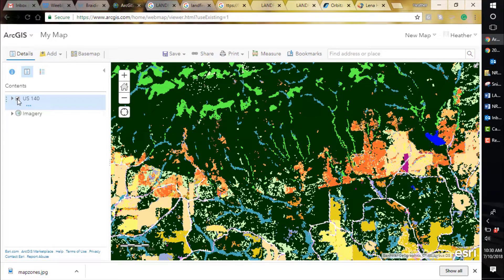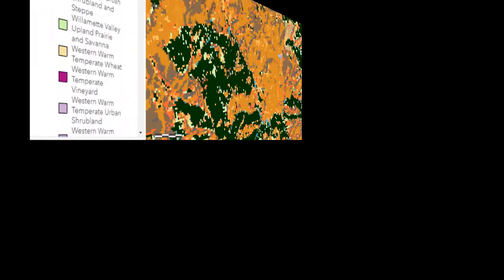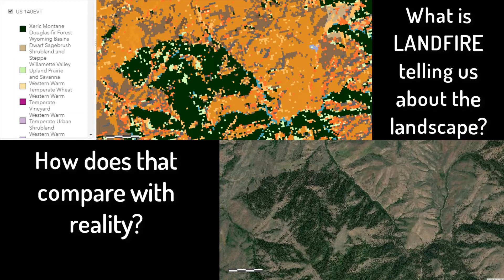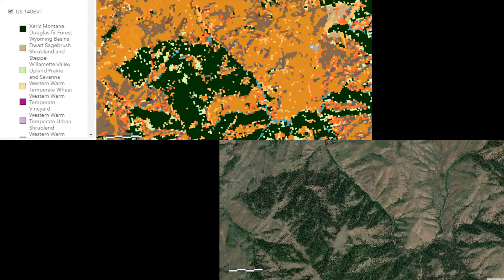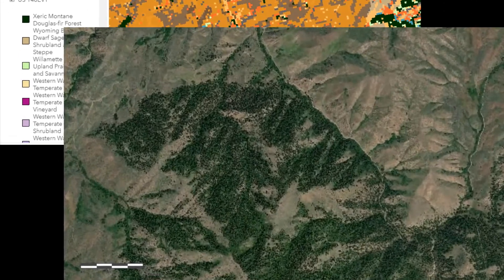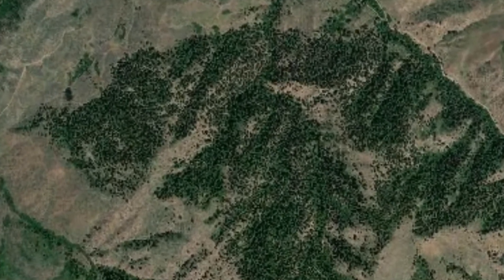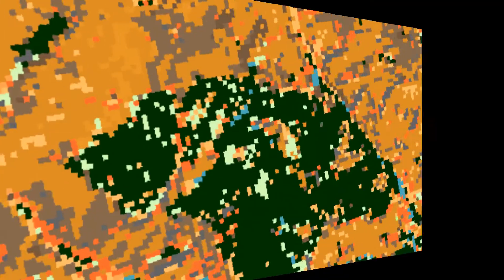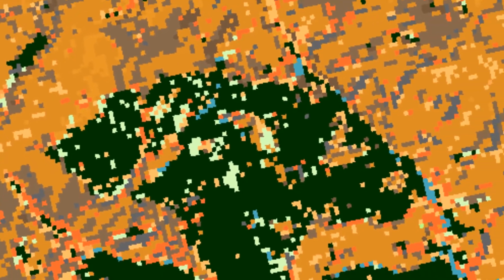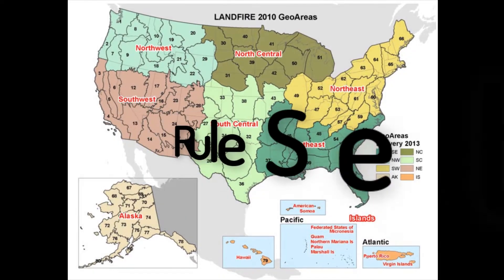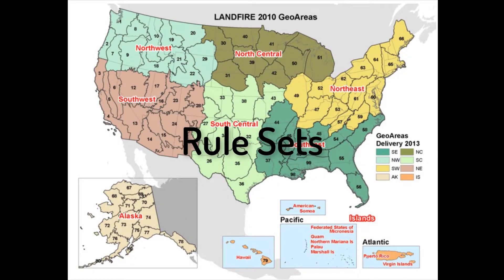The information collected by Landsat is informative, but in order to really use it, we need to understand what it's telling us about the landscape, how that matches up to what we see on the landscape, and what we're trying to do. Local and regional experts looked closely at the Landsat information and created formulas to convert that information to different vegetation, fuels, and fire regime layers and databases. Depending on where you are, there are different rule sets that determine how that conversion happens.